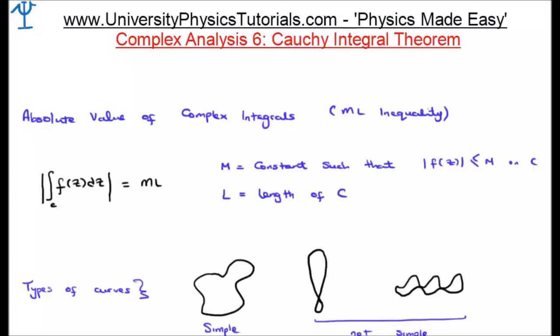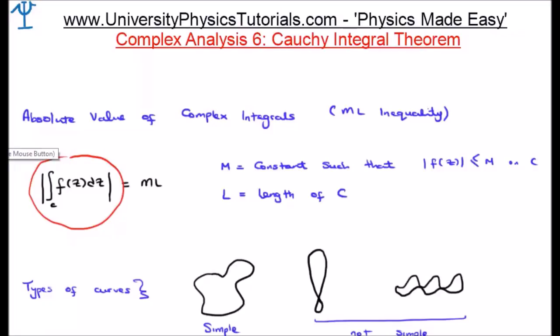There are a few more things to discuss which we'll need later on. The first is the absolute value of a complex integral, known as the ML inequality. It says that if you take the magnitude of your contour integral, it equals M multiplied by L, where M is a constant such that the magnitude of your function is less than or equal to M along the curve, and L is simply the length of the curve. Remember the ML inequality for the absolute value of a complex integral.